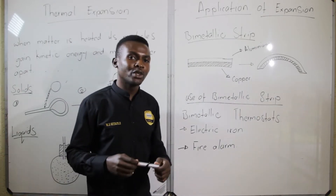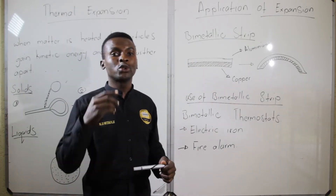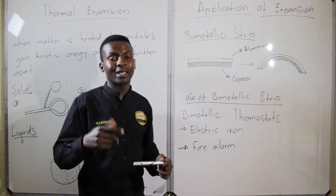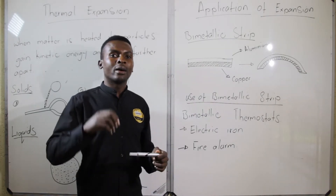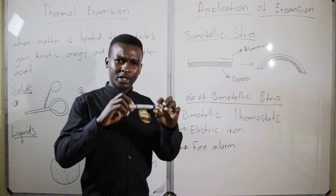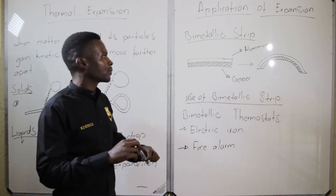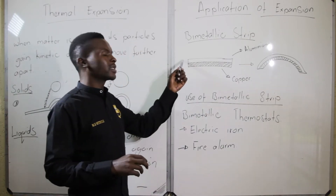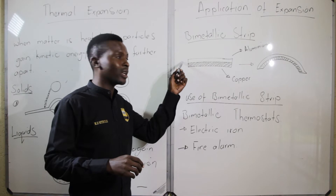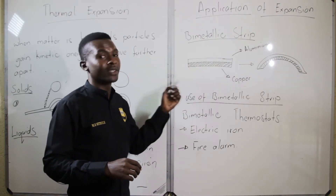The bimetallic strip is made up of two strips — two metals that are riveted together. The first metal may be aluminium and the second one may be copper, as stated in this example.